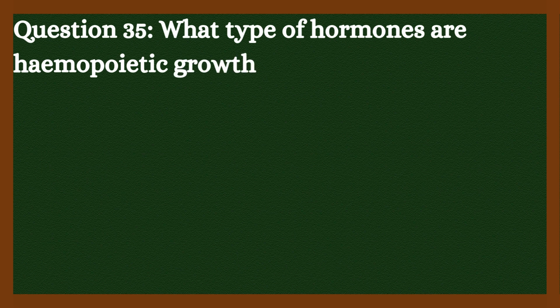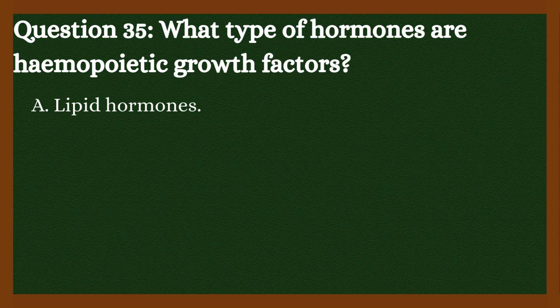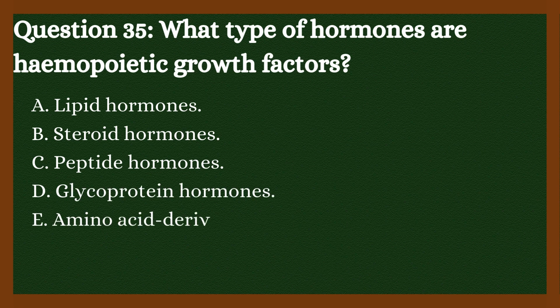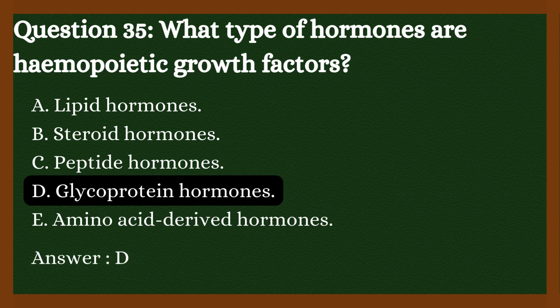Question 35: What type of hormones are hemopoietic growth factors? A. Lipid hormones. B. Steroid hormones. C. Peptide hormones. D. Glycoprotein hormones. E. Amino acid derived hormones. Answer is D. Glycoprotein hormones.